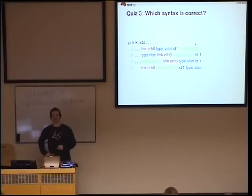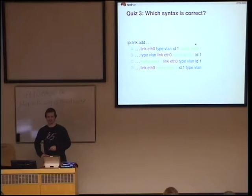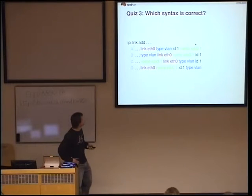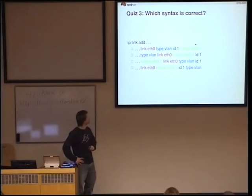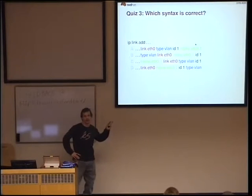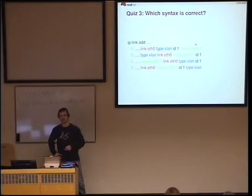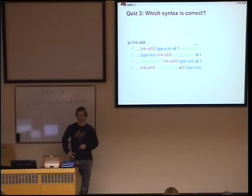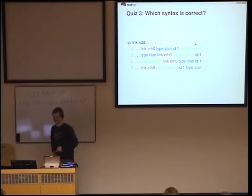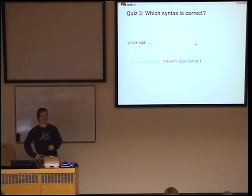Next thing is covering parameter ordering. I've colored the different parts of the parameters for you to easily recognize them: the link part is always in red, the name in green, and the type in blue. Only one of them is valid. C was the right answer.